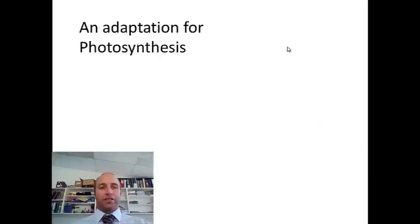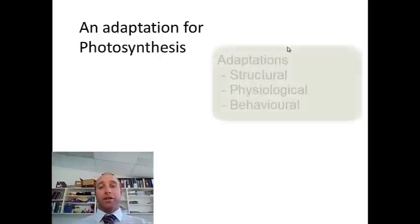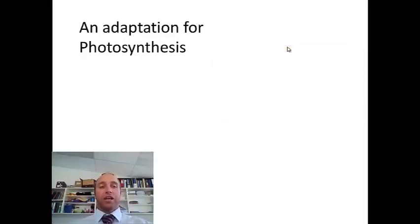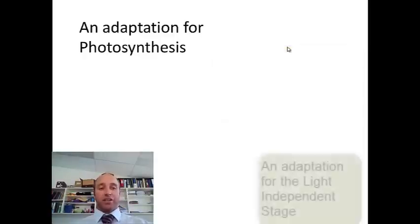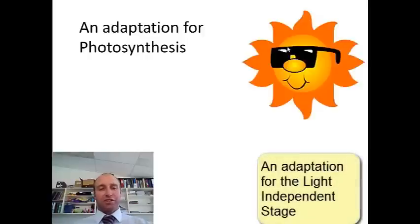These different reactions are adaptations for photosynthesis. As you know from studying adaptations, they can be structural, physiological or behavioural, and they can occur in both plants and animals. The adaptation we're looking at here is a physiological adaptation in plants — that's how their reaction actually happens in the cells.